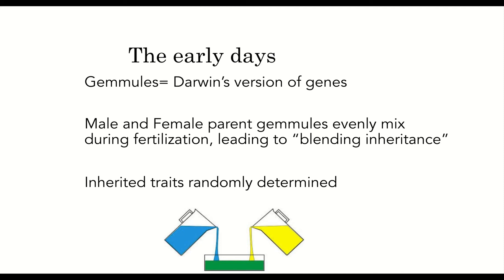Without knowledge of genes or how they operated, the best guess that biologists of the 19th century could come up with was that the traits of parents mixed evenly in offspring. However, it is easy to spot the logical error here: if all children were an average of the characteristics of their parents, variation would be lost over time in populations, meaning that natural selection couldn't influence organisms.